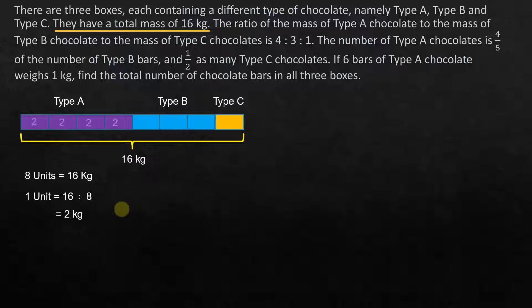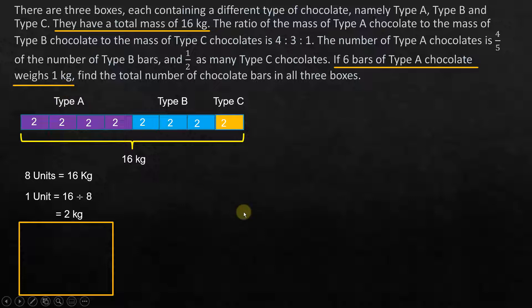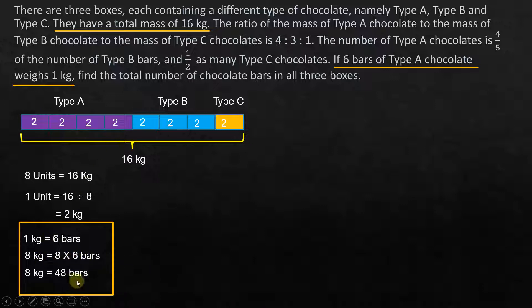So one unit equals 16 divided by 8, which is 2 kilograms. Each of these units represents 2 kilograms. Now for the second piece of information: if six bars of type A chocolate weighs 1 kg, then 1 kg equals 6 bars. Type A has 4 units × 2 kg = 8 kg, so 8 kg equals 8 × 6 = 48 bars. Type A has 48 bars.